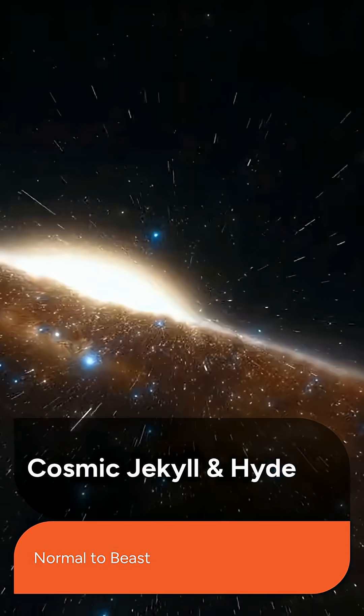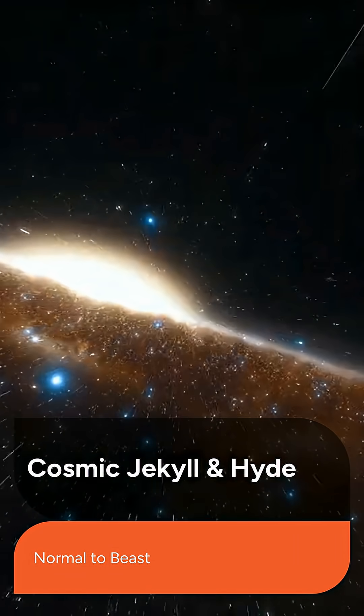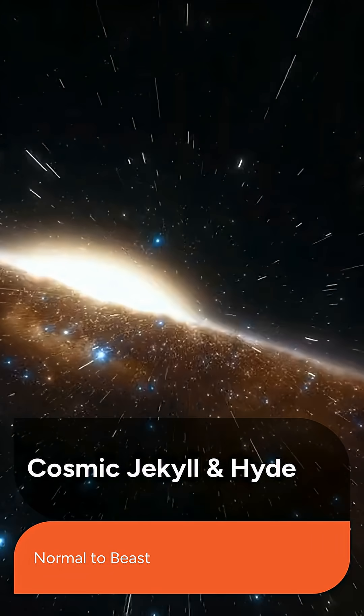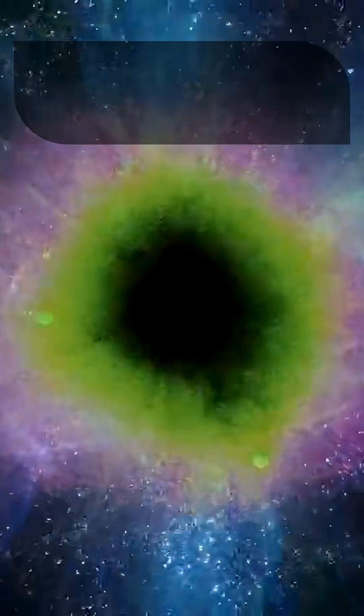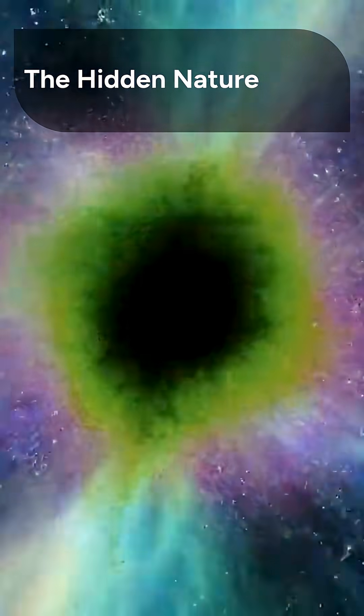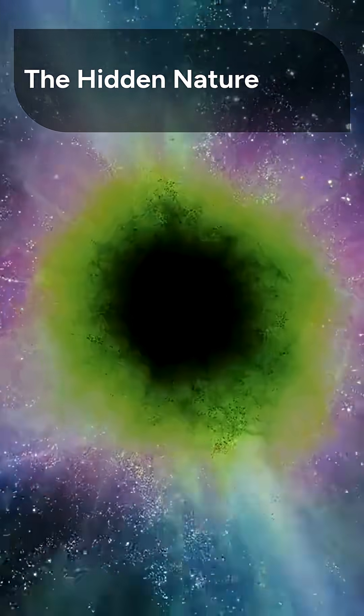Virgil is a true cosmic Jekyll and Hyde. It looks ordinary in visible and UV light, but transforms into a beast at infrared wavelengths. This extreme contrast exposed Virgil's hidden nature, a supermassive black hole at its center.